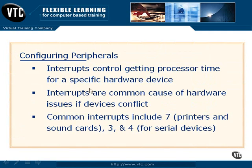Devices that actually use interrupts use those interrupts to request processor time. Basically, there are a total of 16 interrupts, 0 through 15. The ranking, with 0 the highest and 15 the lowest, lets the CPU know which device to give attention to at any given time.